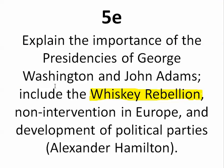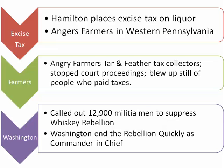Explaining the importance of the presidencies of George Washington and John Adams: include the Whiskey Rebellion. The Whiskey Rebellion is important for us to understand. Alexander Hamilton, the Secretary of Treasury under George Washington, passed an excise tax on liquor. Out in western Pennsylvania, some farmers were growing crops, and they had stills, and they were making liquor and whiskey. This is going to anger a lot of these farmers in western Pennsylvania.